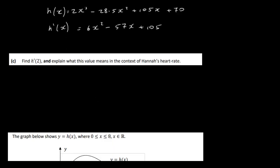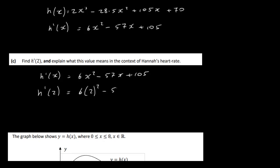Next, find h prime of 2. We have h prime of x equal to 6x squared minus 57x plus 105. We want to put 2 in to find the rate of change at 2 minutes. So it's 6 times 2 squared minus 57 times 2 plus 105. When you work that out you should get 15 beats per minute.